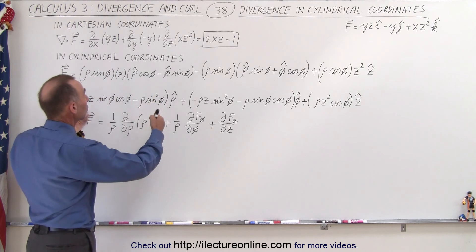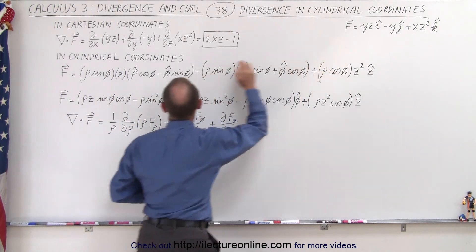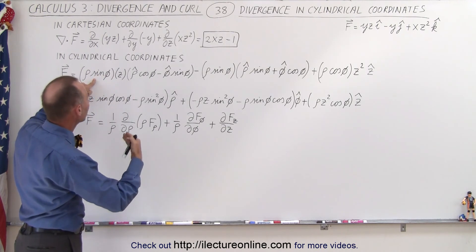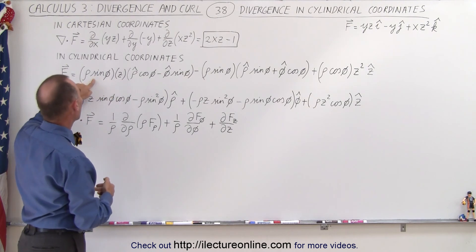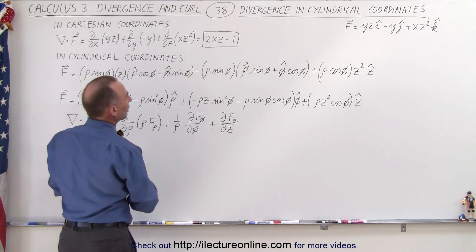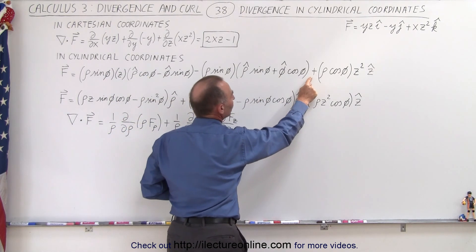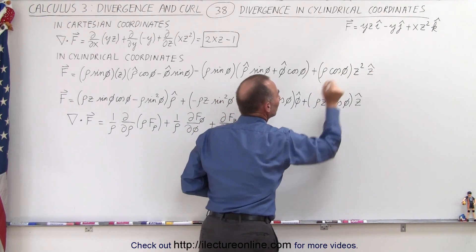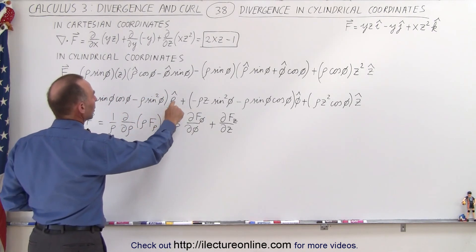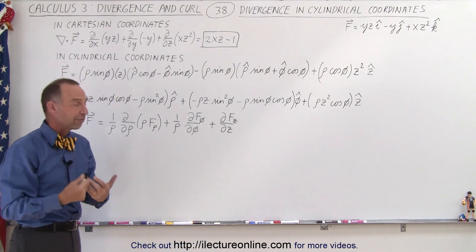When we do it in cylindrical coordinates we should get the very same result. But first we need to convert from Cartesian coordinates into cylindrical coordinates. We need to take y and z and convert them — for z that's easy, but for y it's rho times the sine of phi. Then we take i and convert it into cylindrical coordinates, then we have minus y times j in cylindrical coordinates, plus x times z squared in the z direction. When we combine all the terms belonging to the rho unit vector, the phi unit vector, and the z unit vector, this is what the new expression looks like for that vector field.